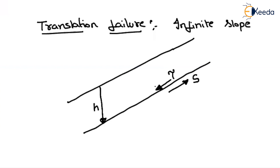When the slope will be stable — as long as your shear strength is greater than the applied shear stress, then our slope will be stable. Once the shear stress exceeds the shear strength of the soil, then only translational failure occurs. That means, if tau is greater than S, then we can get the translational failure.